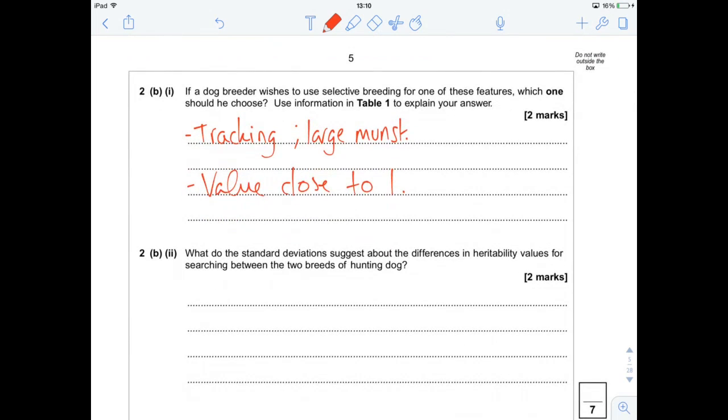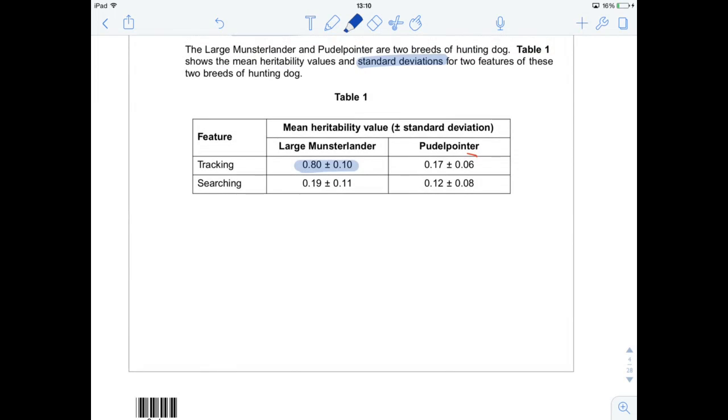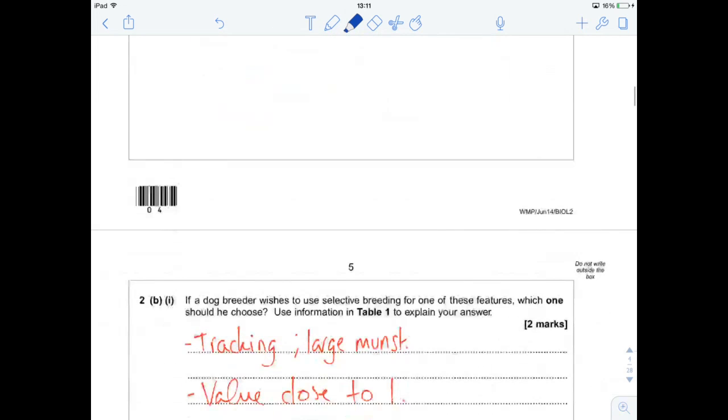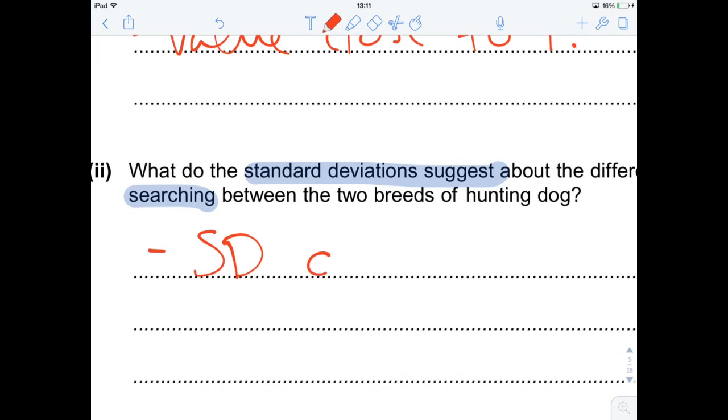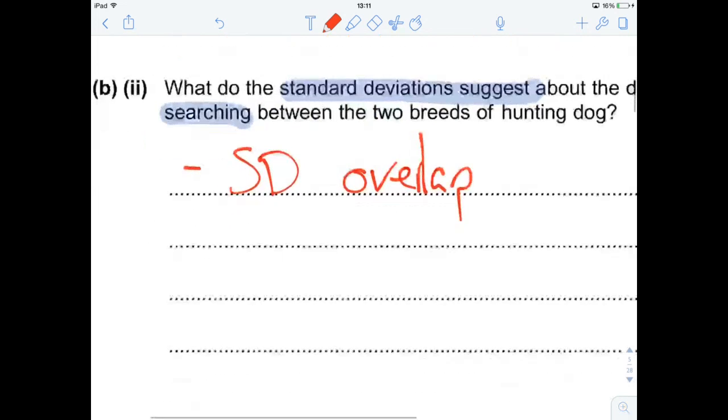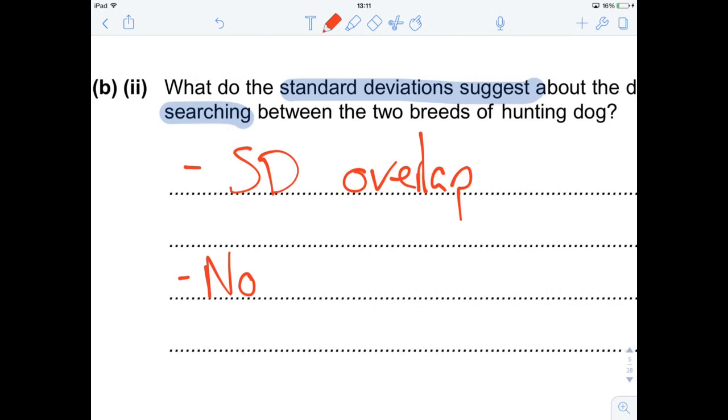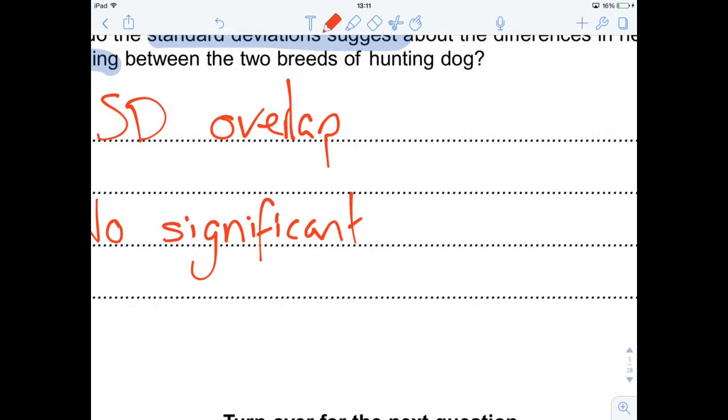And then the next question. What do the standard deviations suggest about the differences in heritability values for searching between the two breeds of dog? Well, let's get rid of this highlighting and look at searching. And what we see is that the standard deviations overlap. There's a lot of values for both the large munsterlander and the large poodle pointer that there is no real difference between the searching heritability in these two species. So when you look at standard deviations, you should always be looking for an overlap. In this case, there is an overlap. So standard deviations overlap. And what we interpret from this is there is no significant difference for the heritability of searching between those two species. So no significant difference.